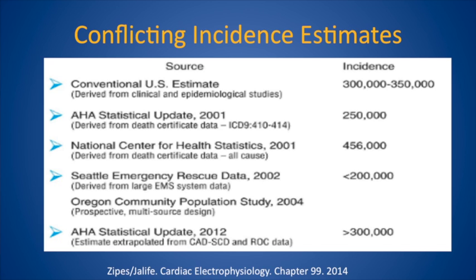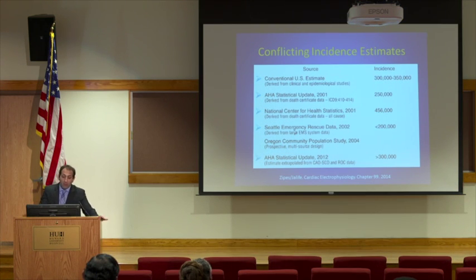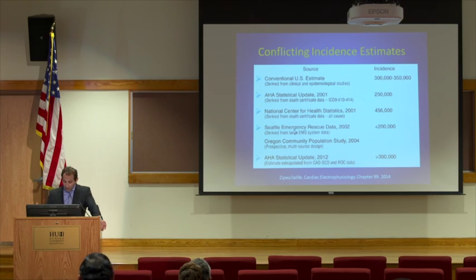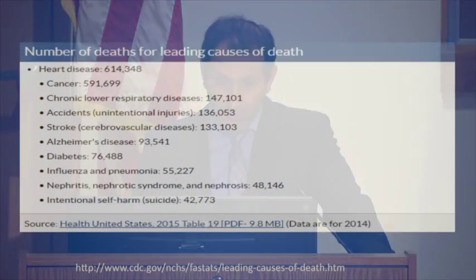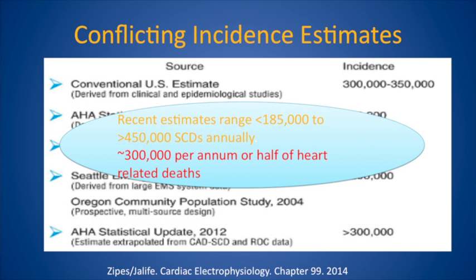In terms of the incidence of sudden cardiac death, it's very hard to estimate. These numbers come from different studies extrapolated from smaller populations to the United States, and that number ranges from somewhere between 185,000 to about 450,000 deaths caused by sudden cardiac death per year. If we average that to about 300,000 deaths per year, that's basically half of all heart-related deaths in the United States — roughly half of the 614,000.